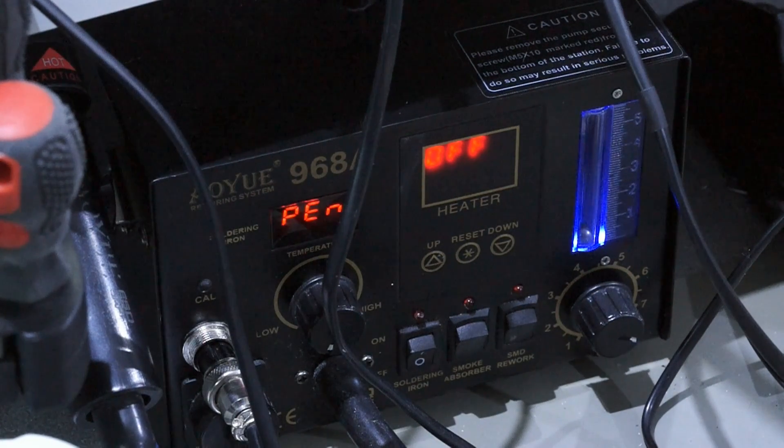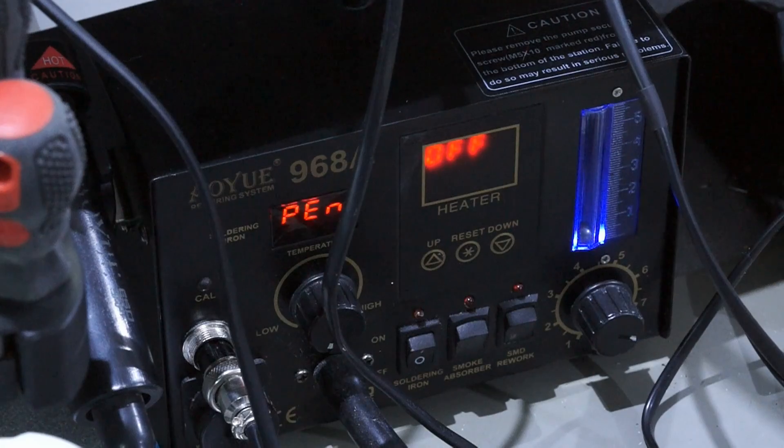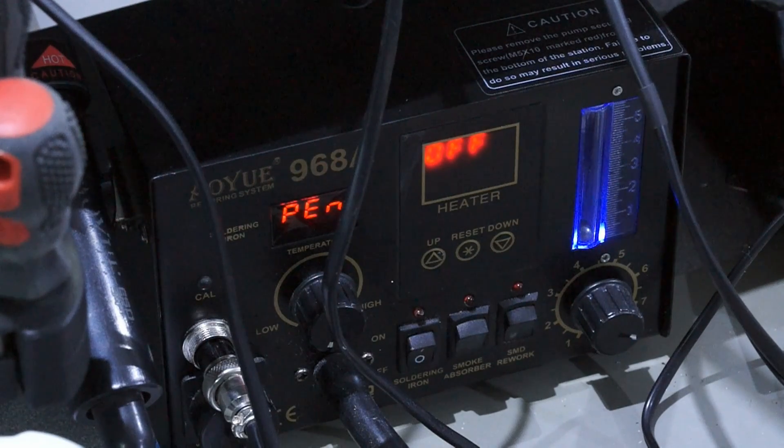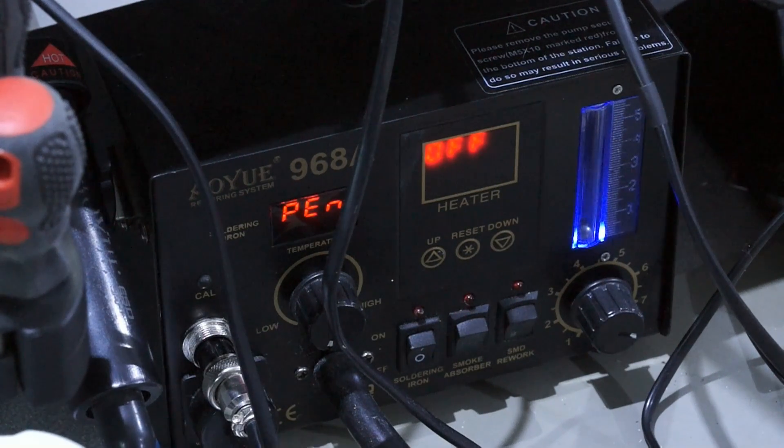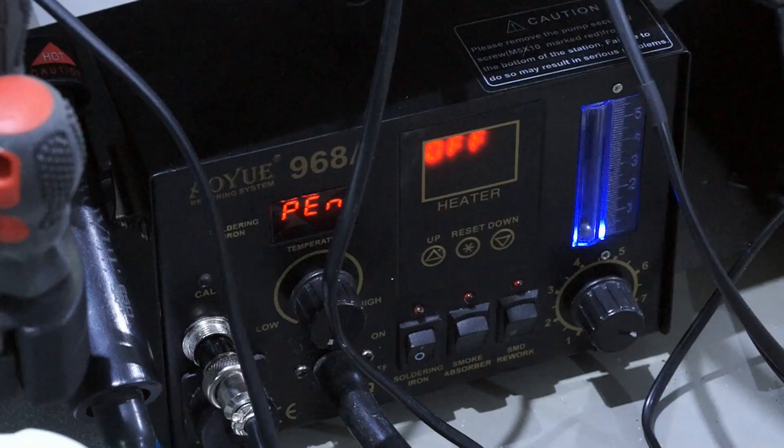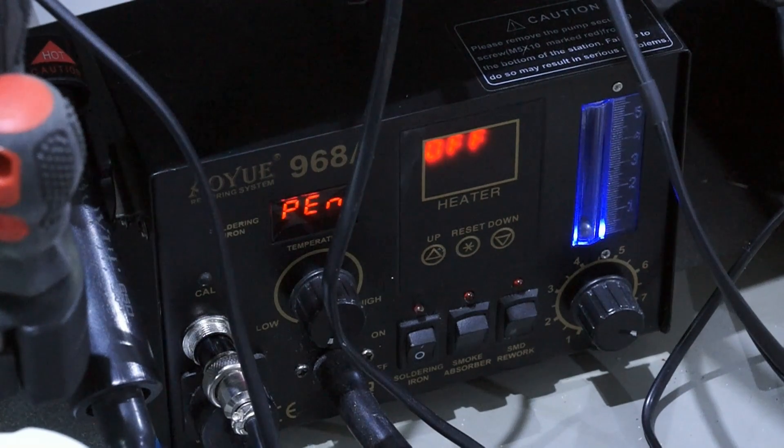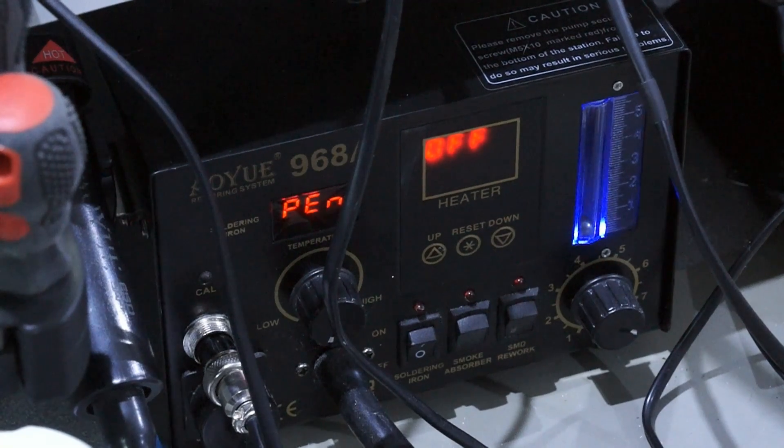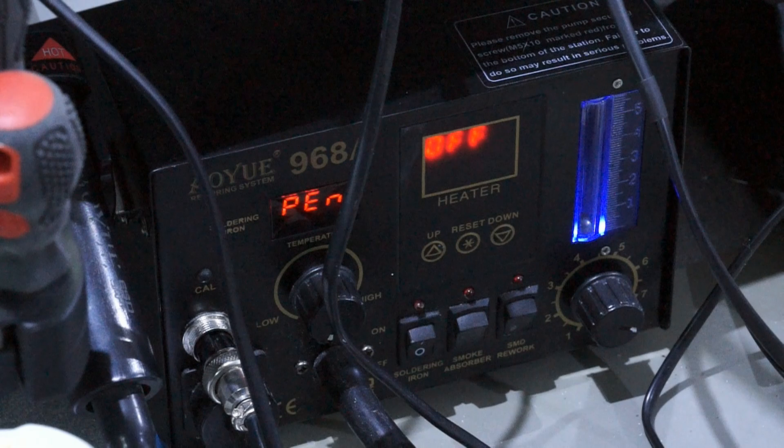Heating elements of modern soldering stations have two parts: a heating element and a thermocouple. If you see the temperature in the display but the iron stays cold, then the heating element could be defective.